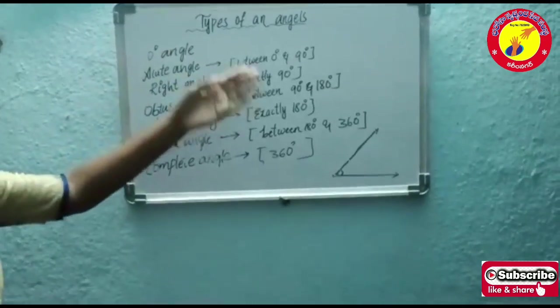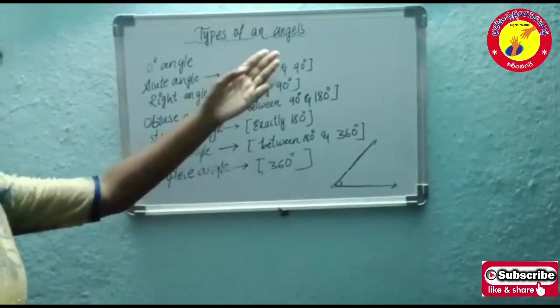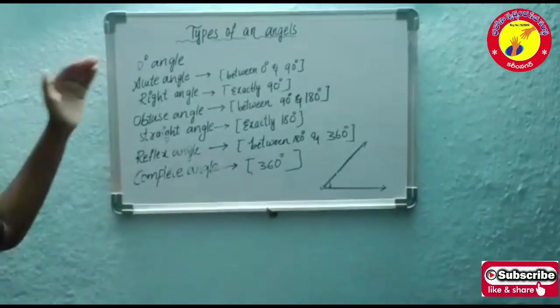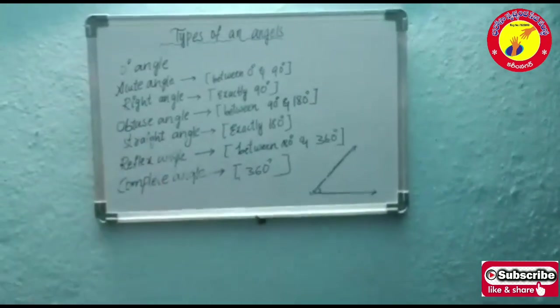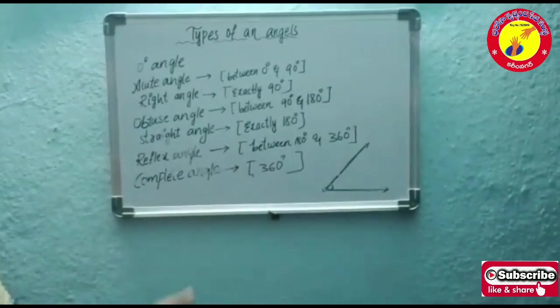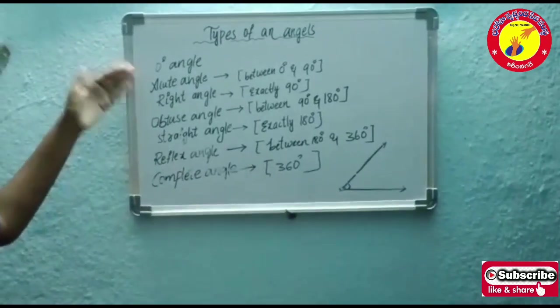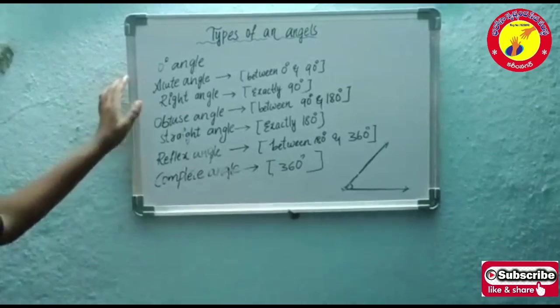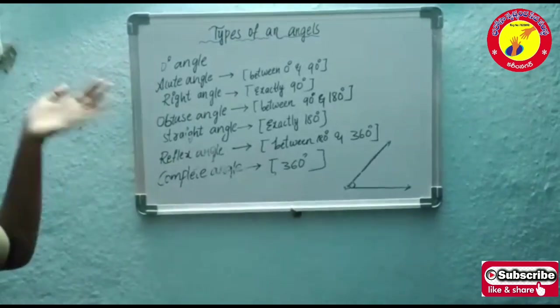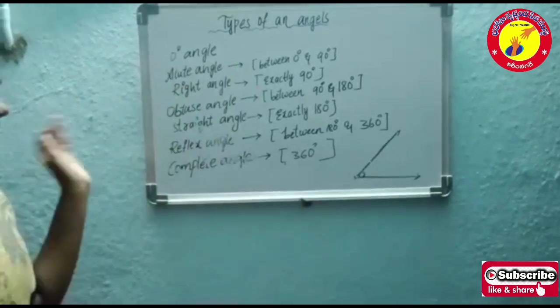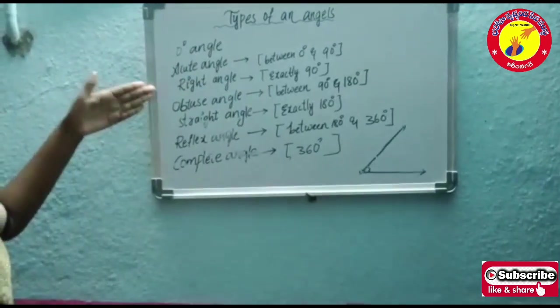Now, the types of angles. First is the zero degree angle. Next is the acute angle — acute angle means between zero degrees to 90 degrees. For example, 60 degrees, 70 degrees, 80 degrees — these are called examples of acute angles.